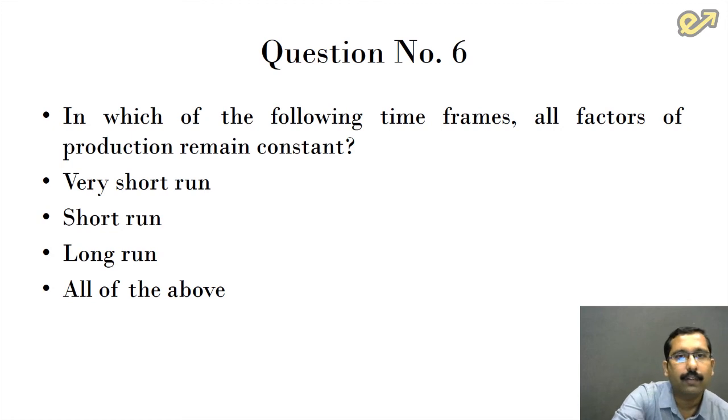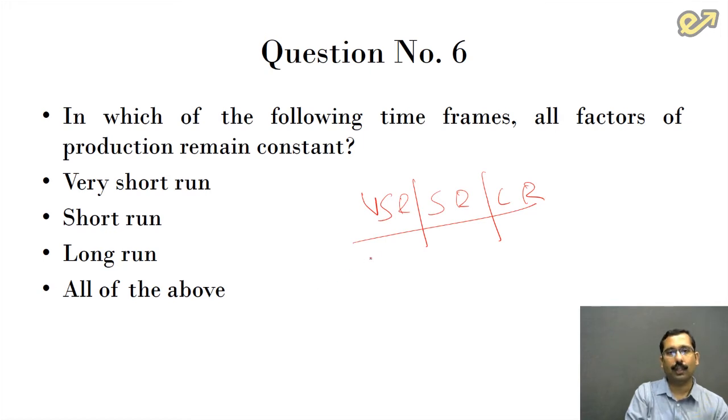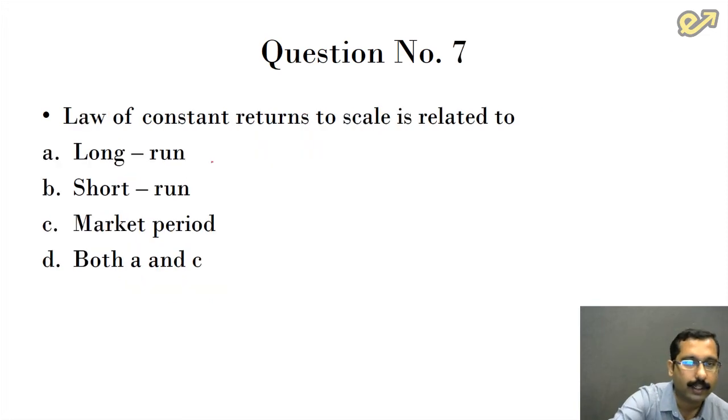In which of the following time frames do all factors of production remain constant? If you broadly classify time frames, we can classify them as very short run, short run, and long run. In very short run, all inputs are kept constant. In short run, few inputs are constant and few are variable. In long run, all inputs are variable in nature. So the answer is very short run, which is option A.